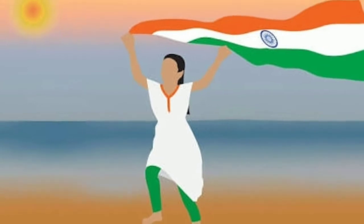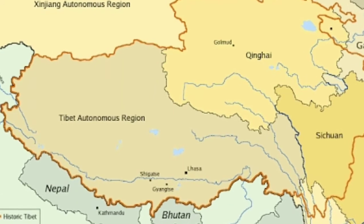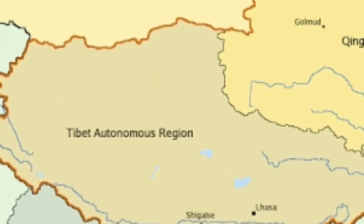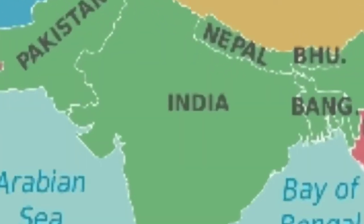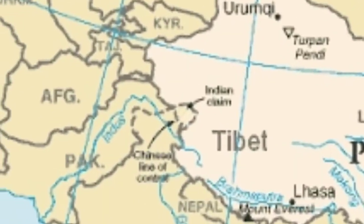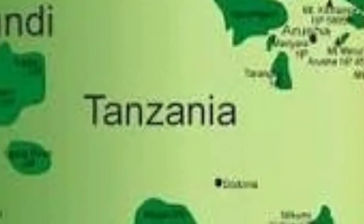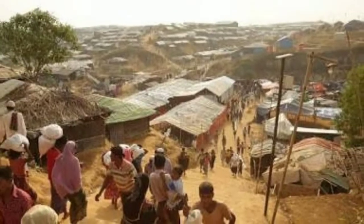Looking at the eligibility criteria, candidates must be a citizen of India, or a national or subject of Nepal or Bhutan. Also eligible are Tibetan refugees who came to India before January 1, 1962 to permanently settle down. A person of Indian origin who has migrated from Burma, Pakistan, Sri Lanka, and East African countries of Kenya, Uganda, the United Republic of Tanzania, Zambia, Malawi, Zaire, and Ethiopia or Vietnam with the intention of permanently settling in India is also eligible.